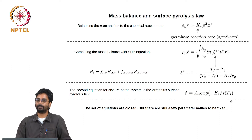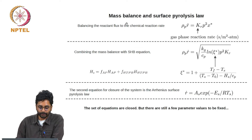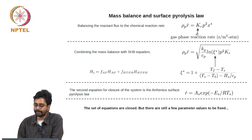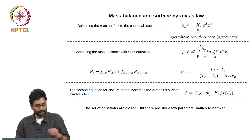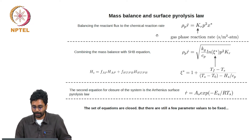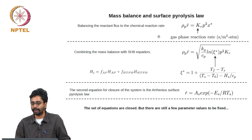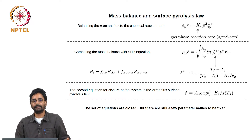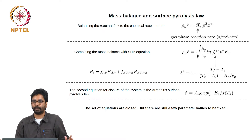The two more equations come from: one comes from the premixed flame theory. This is exactly the same as rho_u * S_u = omega_dot * delta, which we used in the premixed flame theory to get an expression for the flame speed and the flame thickness. Here it is exactly the same — the burn rate of the AP monopropellant or the homogeneous propellant is balanced by the consumption rate of the reactants in the gas phase. The reaction rate is assumed to be proportional to p-squared, assuming a bimolecular reaction at a certain standoff distance.